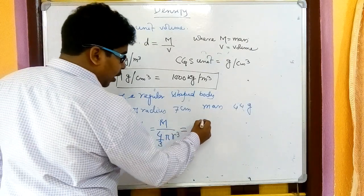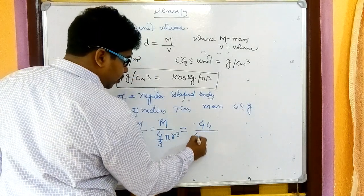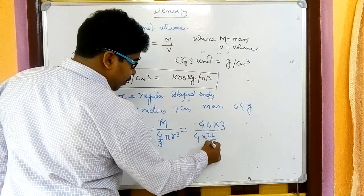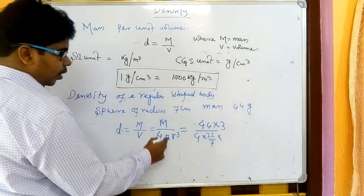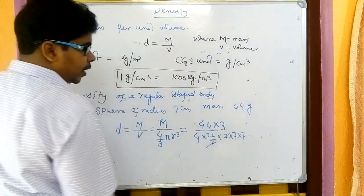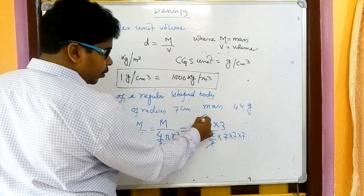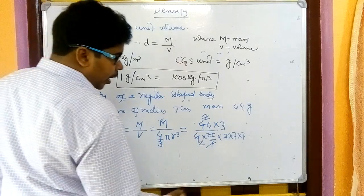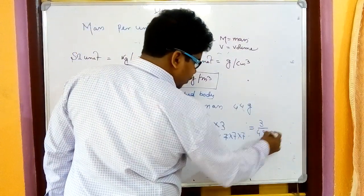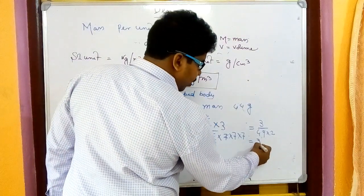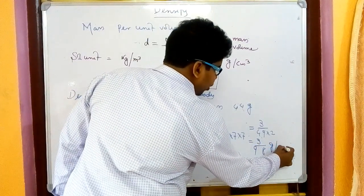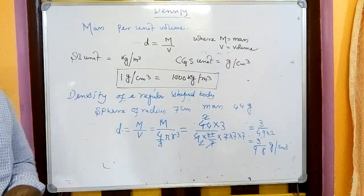Substituting the values: density = 44 / [(4/3) × (22/7) × 7³]. The 7s cancel, and after simplification we get 3/98 gram per centimeter cube. You can convert that to decimal — in an exam this type of digit will not typically appear; this is just an example.